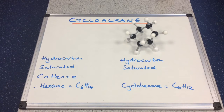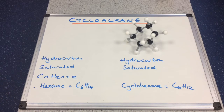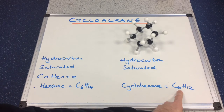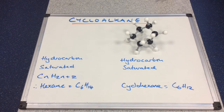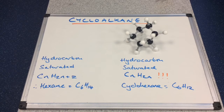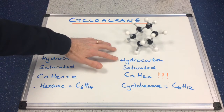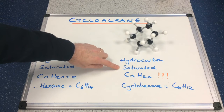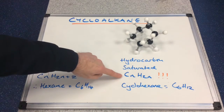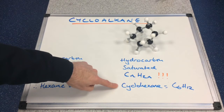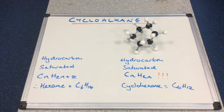So we've got a different molecular formula. Do we have a different general formula? Yes, we do, because the ratio between carbons and hydrogens is now one to two. So we've got the same general formula as the alkene homologous series. To summarise: cyclic alkanes are hydrocarbons, they are saturated, they have a different general formula to regular alkanes — CnH2n — and an example is cyclohexane, which is C6H12.